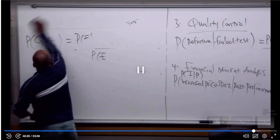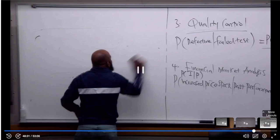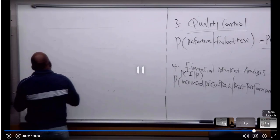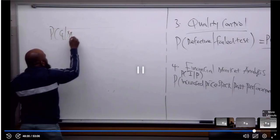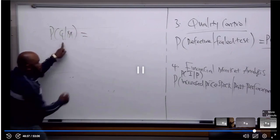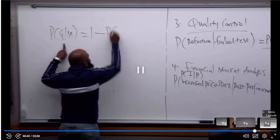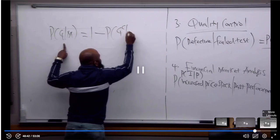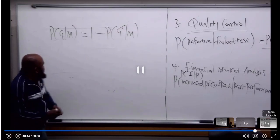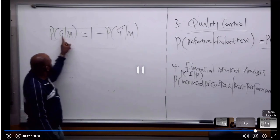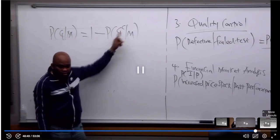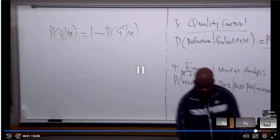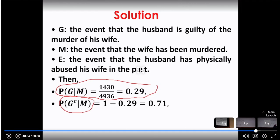From this we can also find: if I know the probability of G given M, then the probability of G-complement given M is one minus the probability of G given M. So the probability that the husband is not guilty given that the wife has been murdered is 0.71.